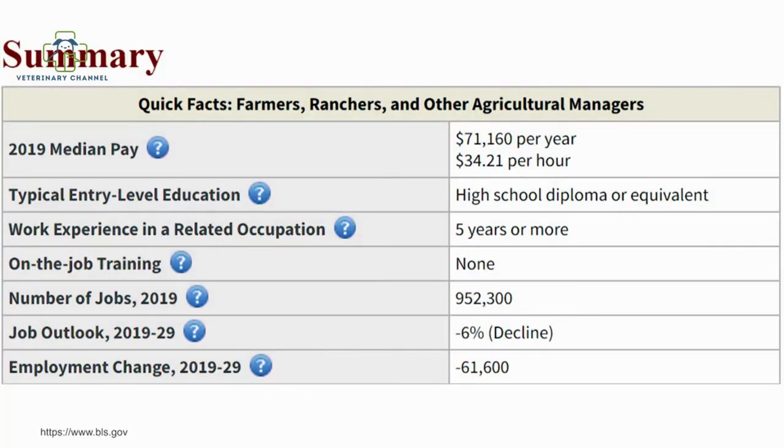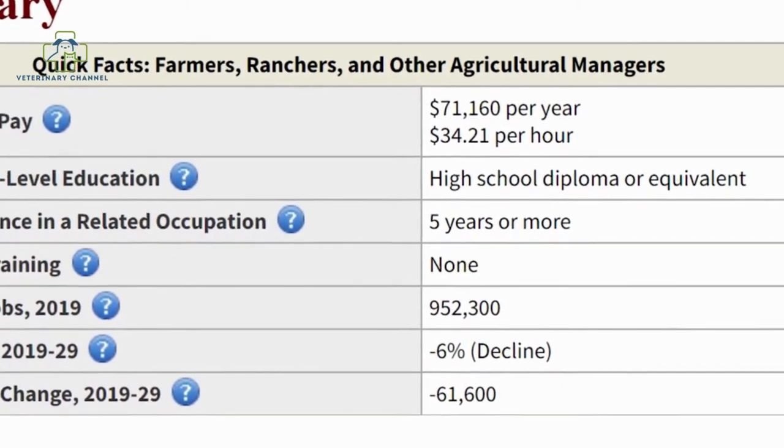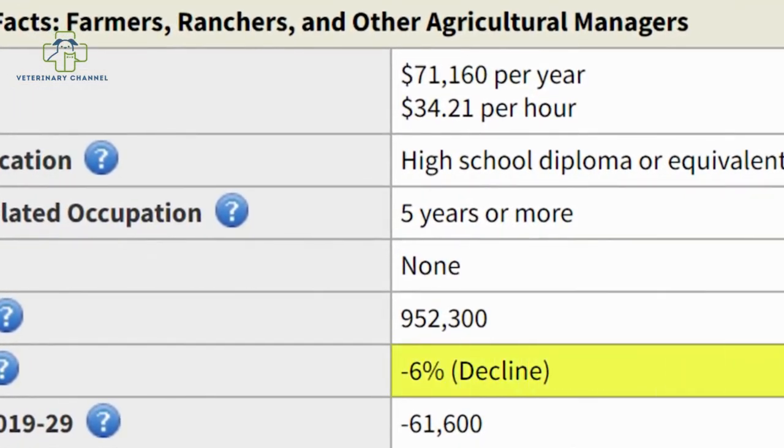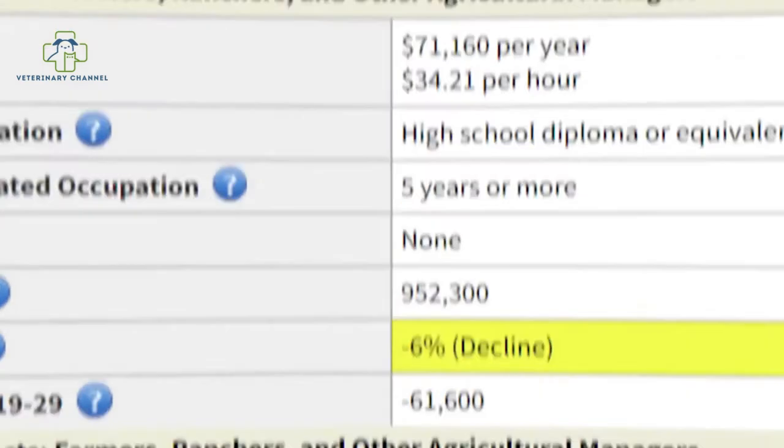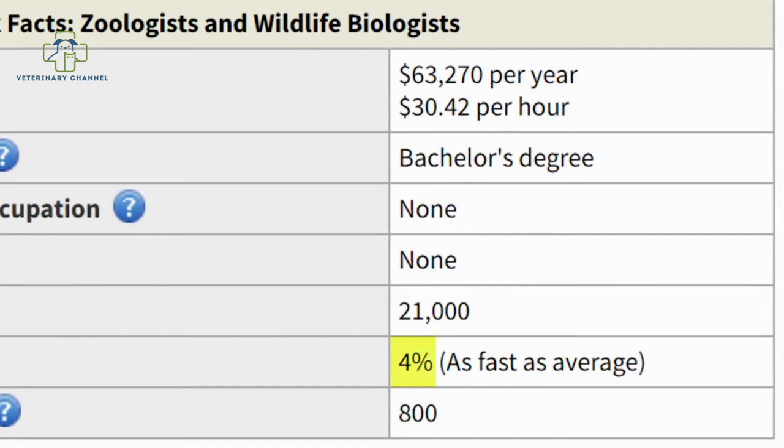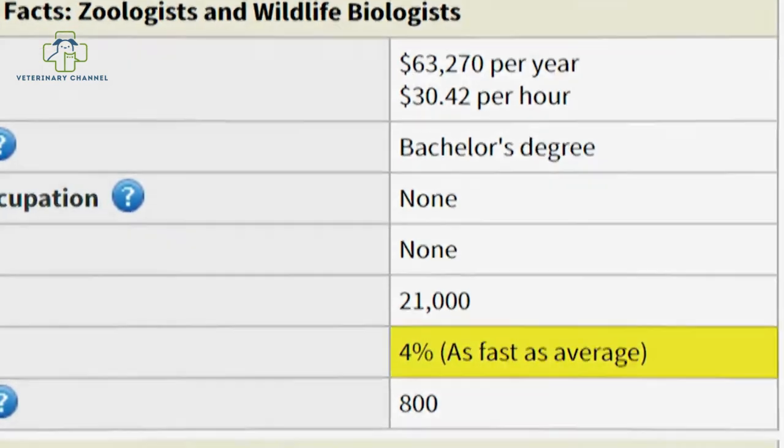Next on the list, we're going to be talking about demand. In my opinion, demand is the most important out of all of the different factors. When it comes to farmers, for instance, this industry is currently being disrupted by technology. They're expected to grow at negative 6% over the next 10 years. Zoologists, on the other hand, are expected to grow at a positive rate of 4%, which is around average over the next 10 years.